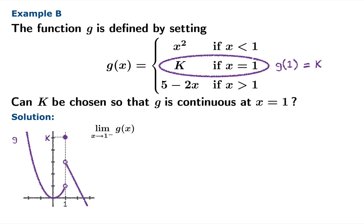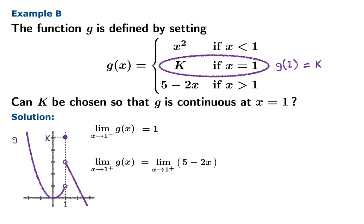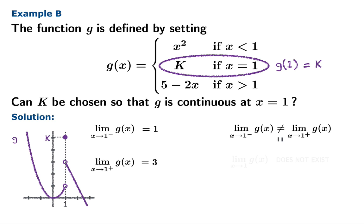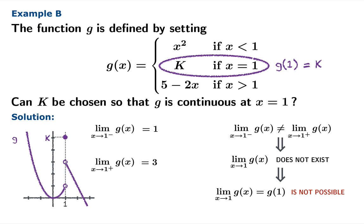Let's make this official. The limit of g of x as x approaches 1 from the left: substituting the appropriate piece, we can plug 1 into the polynomial, giving a left-hand limit of 1. For the limit from the right, we substitute the linear piece 5 minus 2x; since linear functions are continuous we plug in 1, giving a right-hand limit of 3. These don't match, so the limit doesn't exist and the function cannot be continuous at 1 — it doesn't matter what we choose for k because the limit is broken.